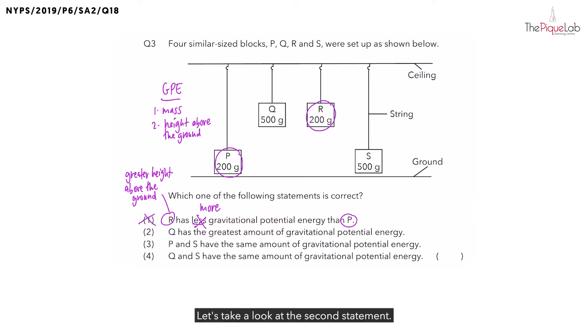Let's take a look at the second statement. Q has the greatest amount of GPE. Let's find object Q. What can you say about its mass? Object Q has the greatest mass. And what about its height above the ground? It also has the greatest height above the ground.